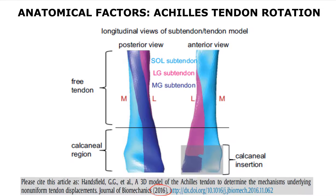Another important article from 2016 talks about the rotation of the Achilles tendon. We know that the Achilles tendon makes a rotation from proximal to distal. There is a contribution to form the Achilles tendon from the lateral gastrocnemius, the soleus, and the medial gastrocnemius, and these three parts make a complete rotation from proximal to distal until the calcaneal insertion. This rotation is described in this article.